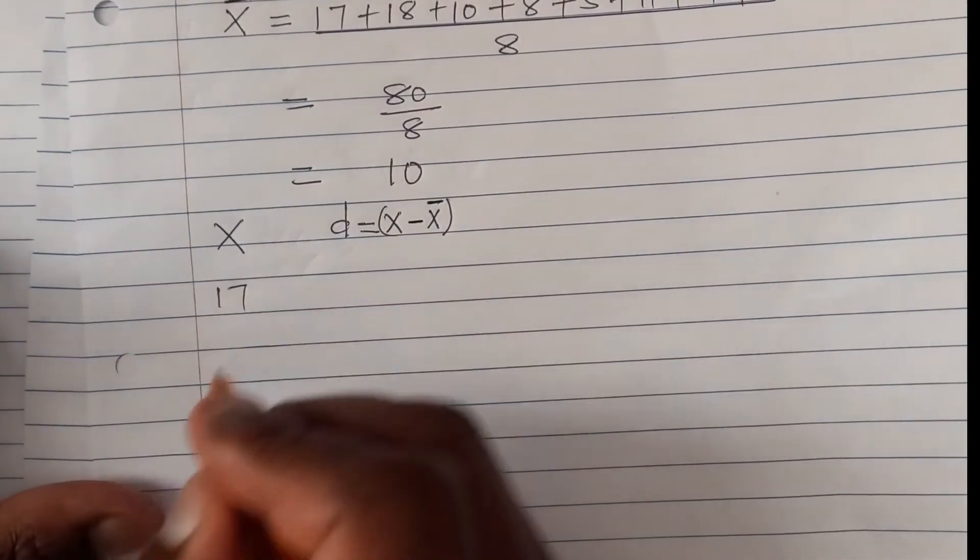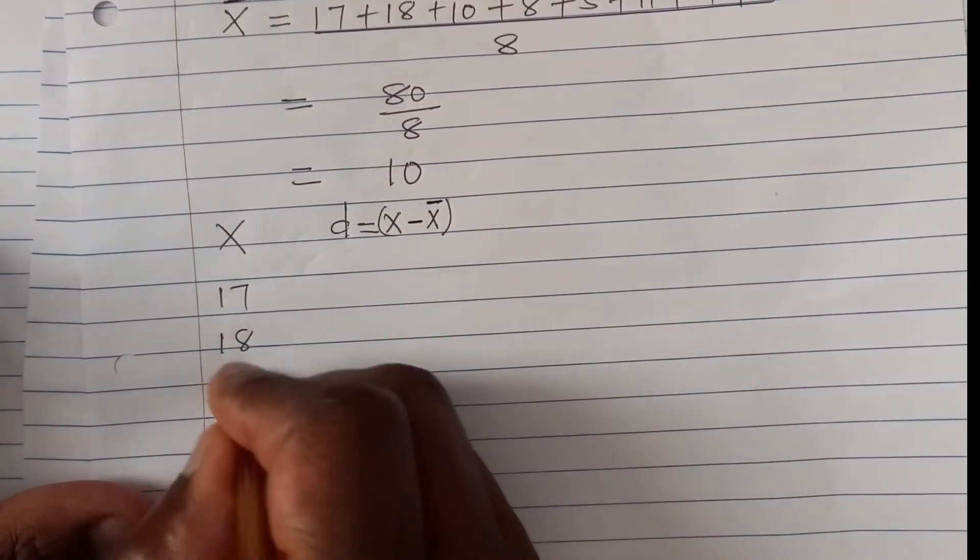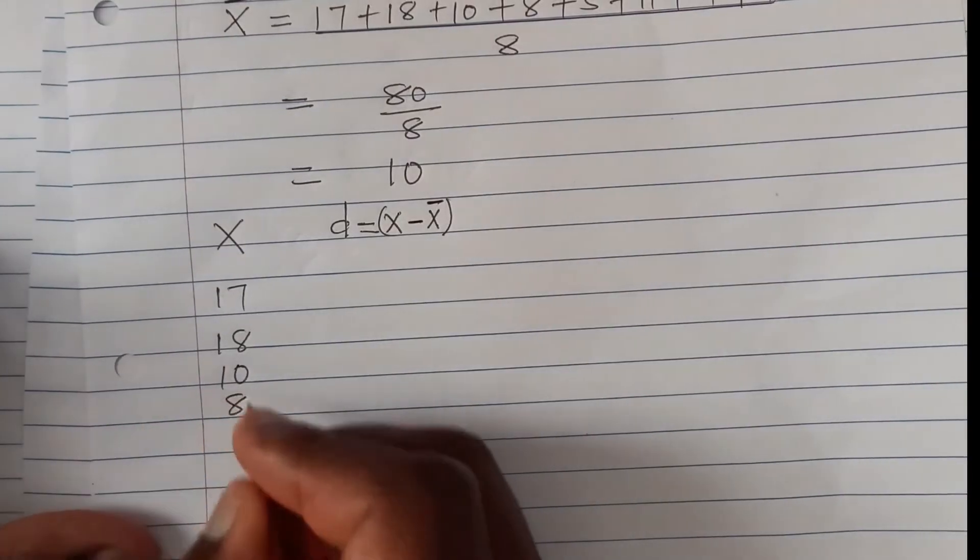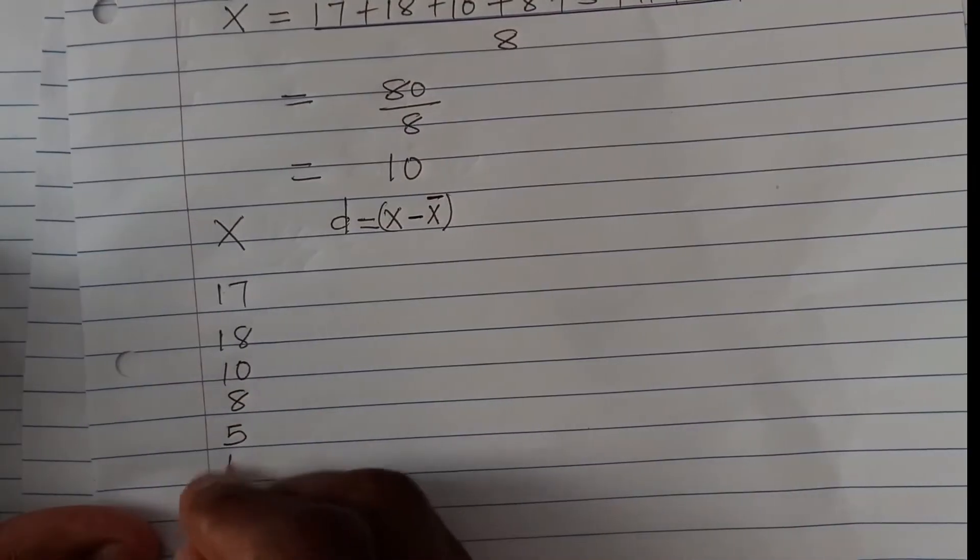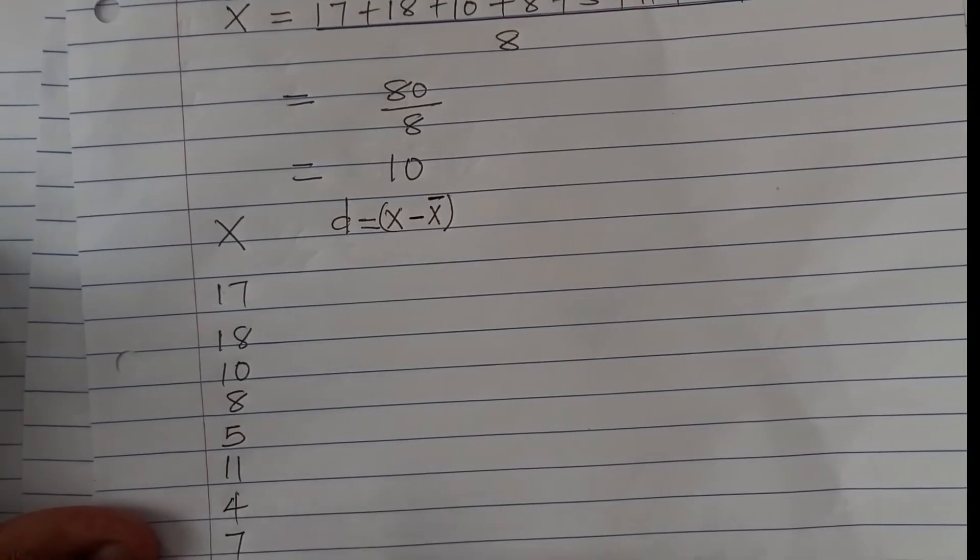So x, we have 17, we have 18, we have 10, we have 8, we have 5, we have 11, we have 4, and we have 7.